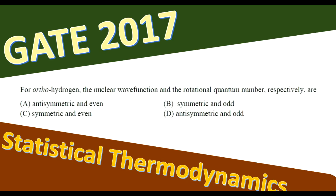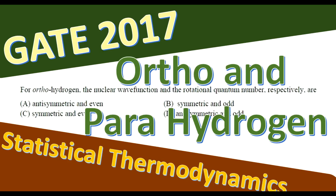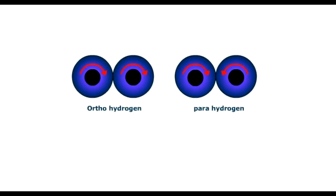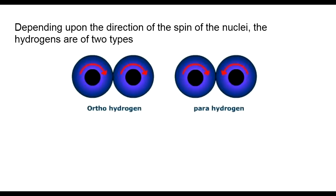Let us look at a question asked on GATE 2017 based on statistical thermodynamics about ortho and para hydrogen. Ortho and para hydrogen are mainly isomers — two isomers of hydrogen. For ortho hydrogen, the nuclear wave function and rotational quantum number respectively are: options given are anti-symmetric and even, symmetric and odd, symmetric and even, and anti-symmetric and odd.